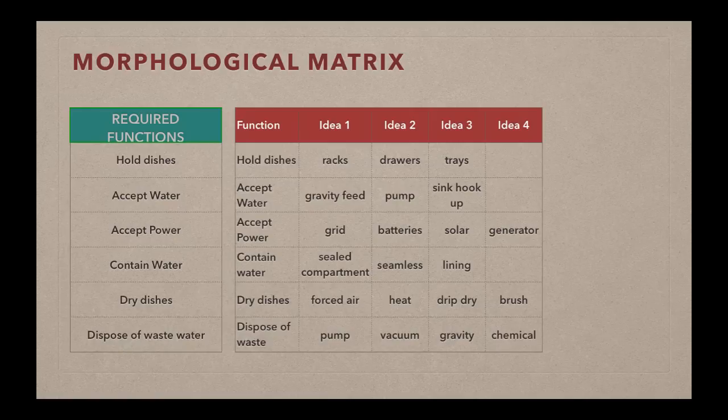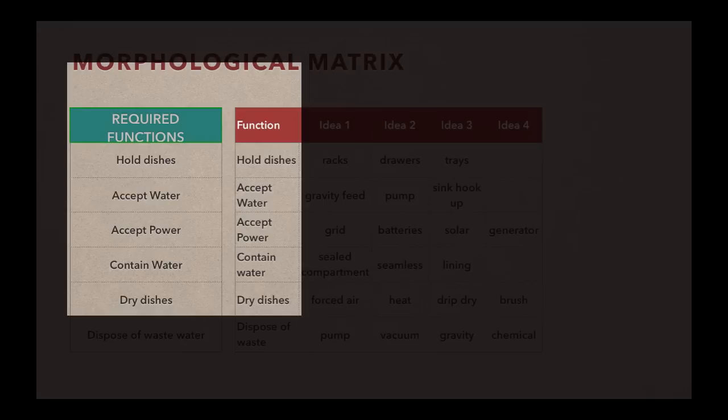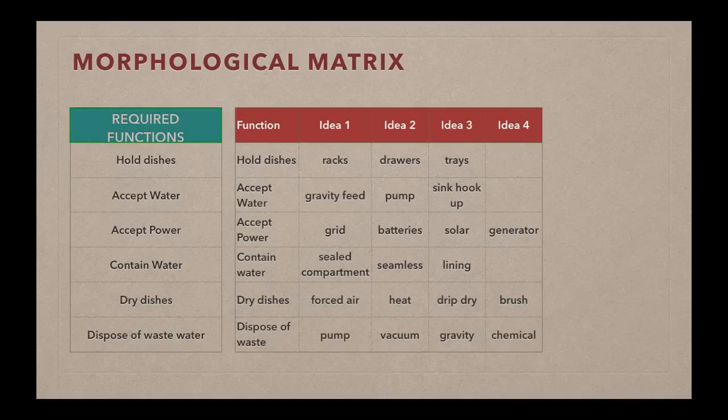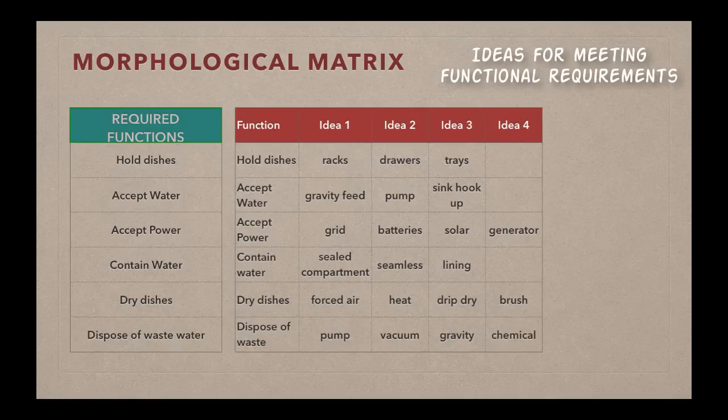And the purpose of a morphological matrix is to help us generate ideas for meeting these functional requirements, and then to combine those different ideas for functional requirements into several different possibilities for concepts. So again, we want to hold the dishes, accept water, accept power, contain the water, dry the dishes, and dispose of waste water.